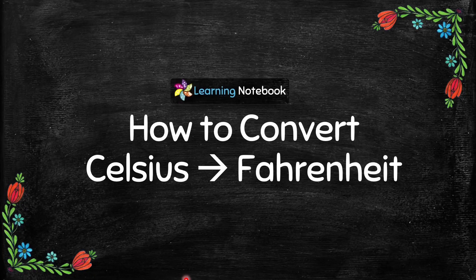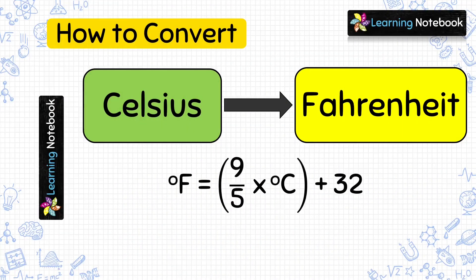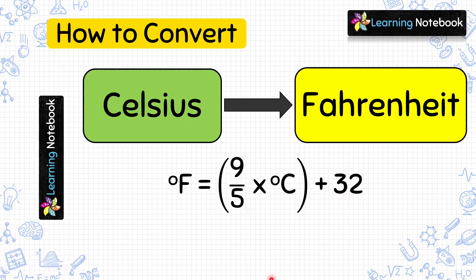Now let's move on and understand how to convert temperature given in Celsius into Fahrenheit. The formula to convert Celsius to Fahrenheit is: 9/5 × Celsius + 32. This formula also has two parts — first we do the multiplication, and then we add 32. Let's see how to use it to solve questions.